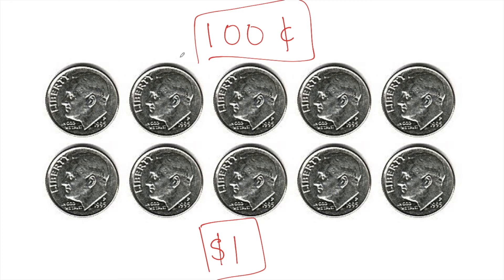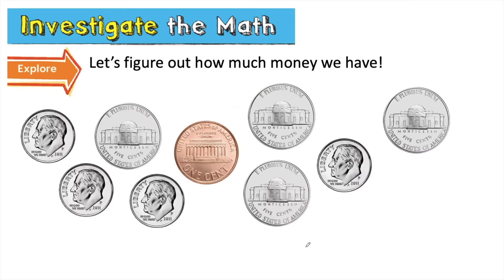If you have 10 dimes and I have a one dollar bill, we have the same amount of money — it's just a different way to show it. This gets back to the last guided practice slide from your work yesterday. It really pushes kids to not only think about how they can use skip counting to figure out how much money they have, but it also helps them sort and organize their coins, thinking about starting with the coin with the greatest value first.